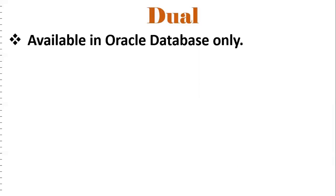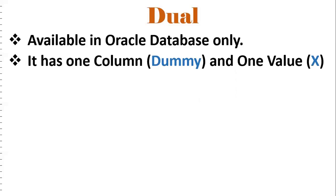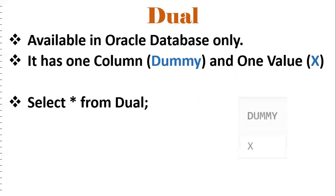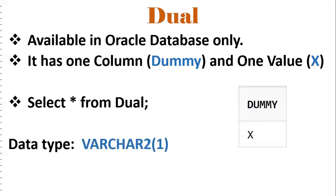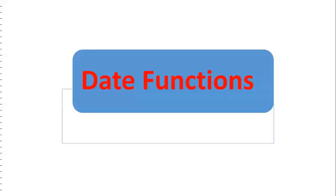The dual table is an Oracle-provided one — it is available only in Oracle databases. It has one column and one value. The name of the column is DUMMY and the value is X. So if we query SELECT * FROM DUAL, you will get DUMMY as the column and X as the value. This is one of the important interview questions: what is the dual table and what is the data type of the DUMMY column? The data type of the DUMMY column is VARCHAR2(1). The main purpose of this dual table is to check logic or to test any functions.